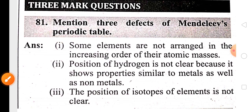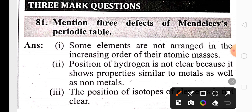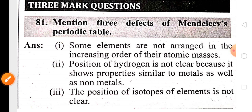The three demerits of Mendeleev's periodic law are: elements are not arranged in strict increasing order of atomic mass, the position of hydrogen is not clearly defined, and the positions of isotopes are also not clearly defined.